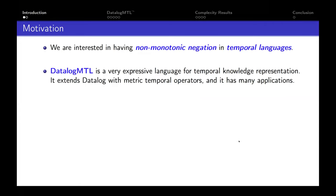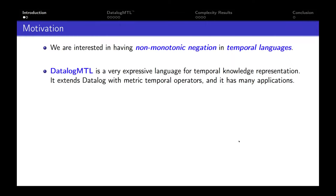Non-monotonic negation is a very useful feature to have in knowledge representation languages, and in particular in temporal languages. For instance, we can specify the rules of temporal inertia, saying that some states of affairs continue unchanged into the future unless we can derive some reason why there needs to be a change.